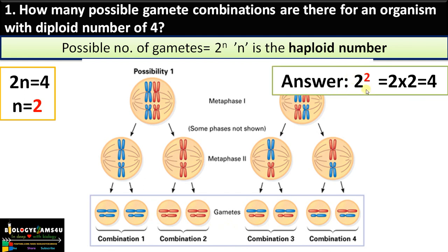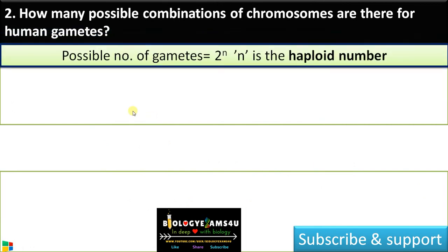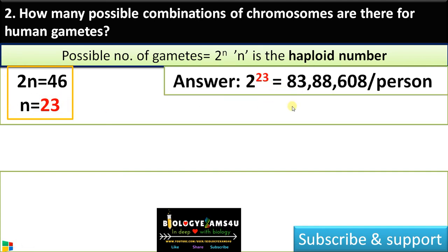So there are four possible combinations — the equation 2 raised to 2, that is 2 into 2 equals 4. If the diploid number is 4, there are four possible combinations: 1, 2, 3, and 4. For humans, as we know the diploid number is 46, therefore the haploid number is 23, and therefore 2 raised to 23 — that is approximately 8 million gamete combinations — and that is responsible for the amazing diversity between different individuals of the same species.